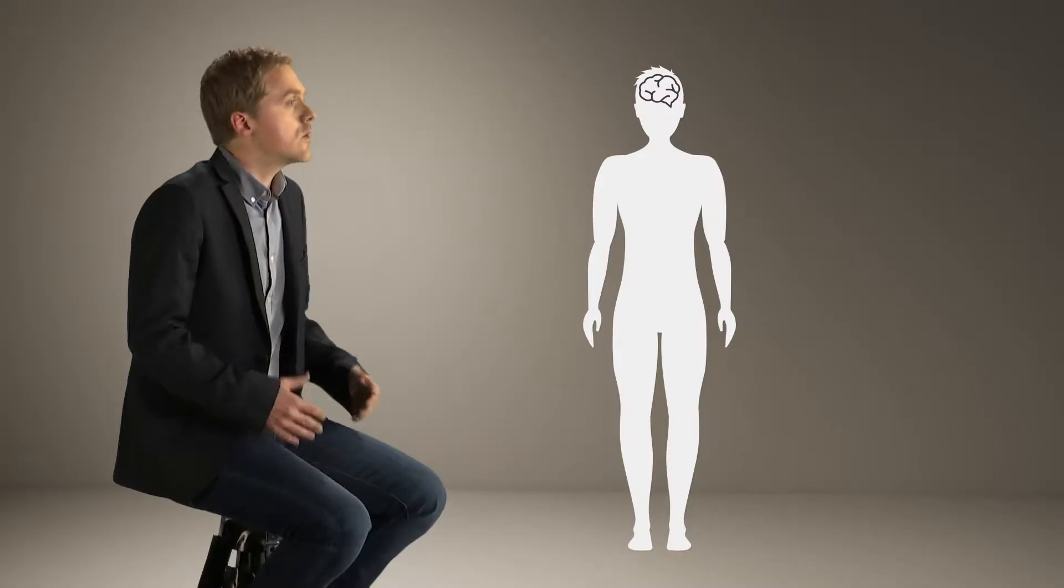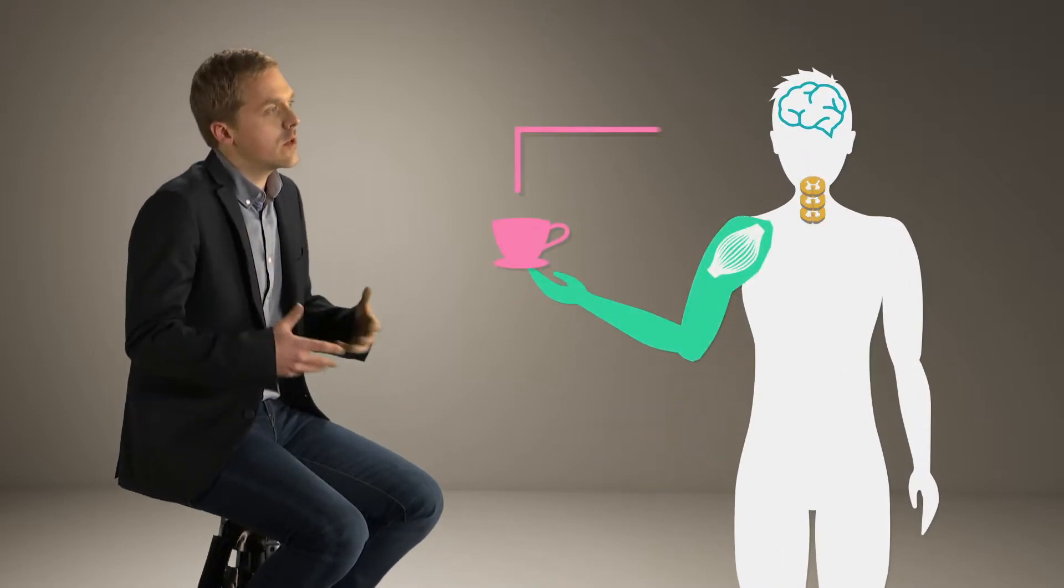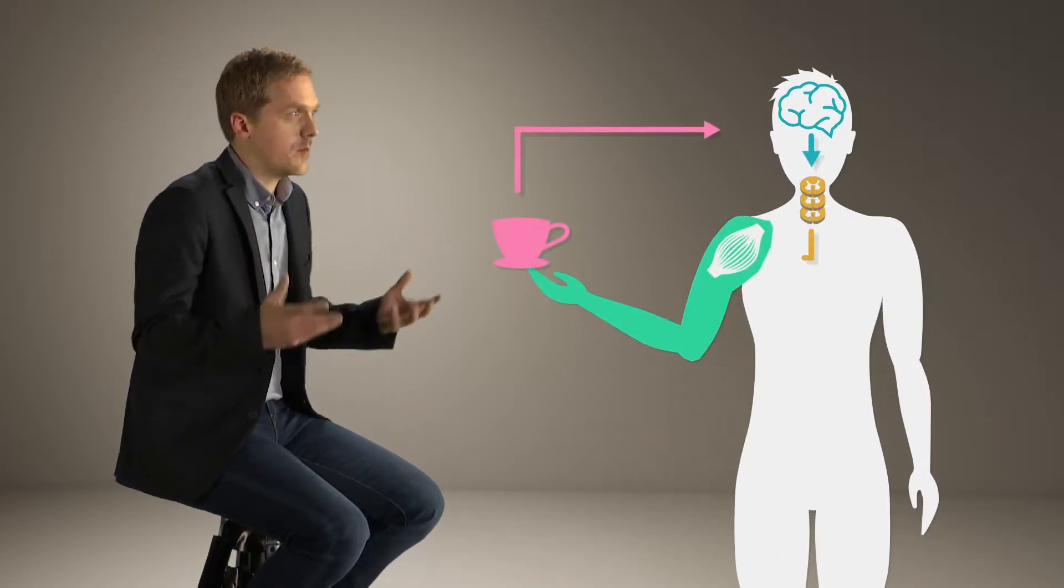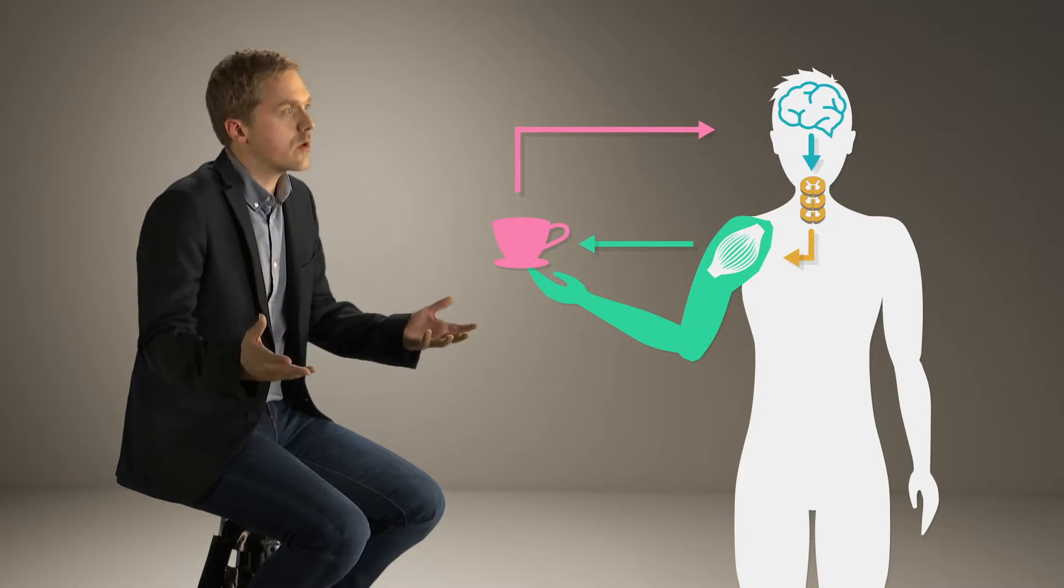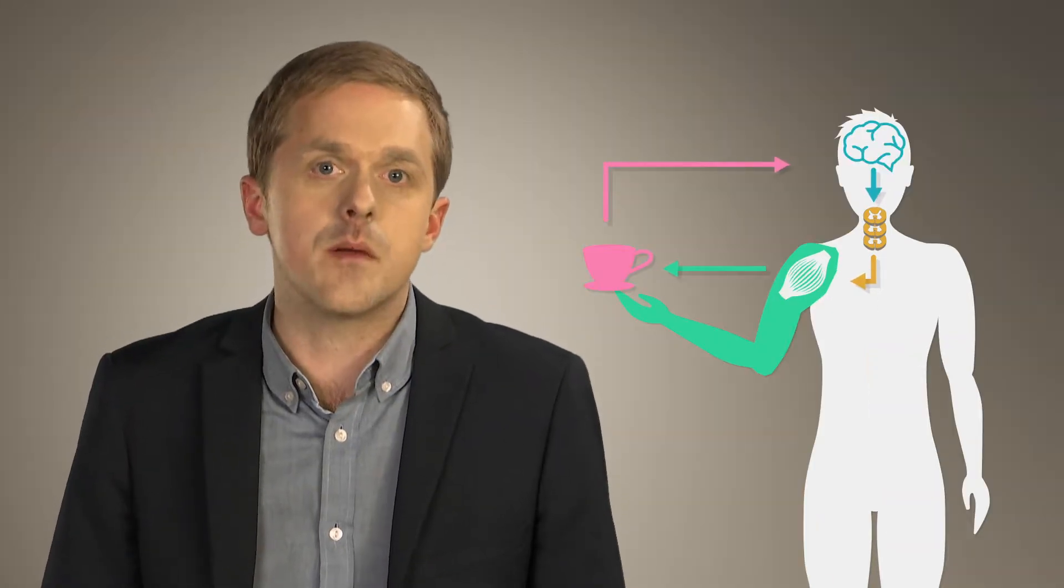And even abstract tasks such as counting are at least in part dependent on motor representations. To study movement control, we use the fact that the nervous system continuously receives sensory information about the environment and transforms it into motor commands. It is a biological feedback control system.